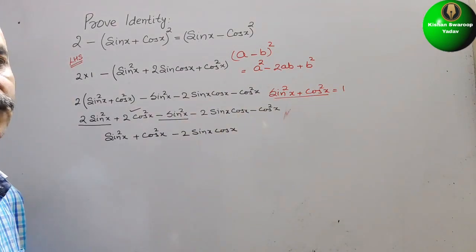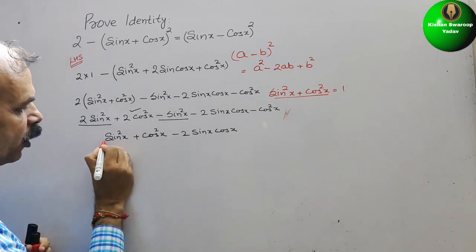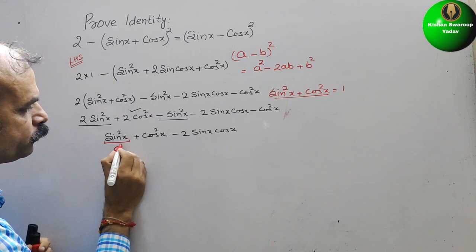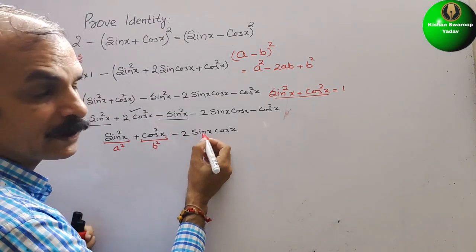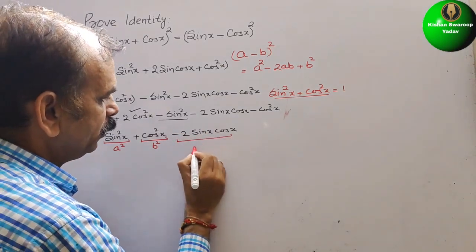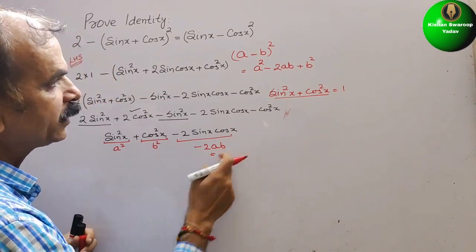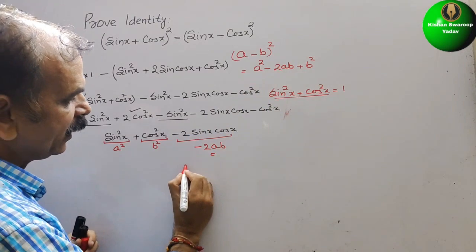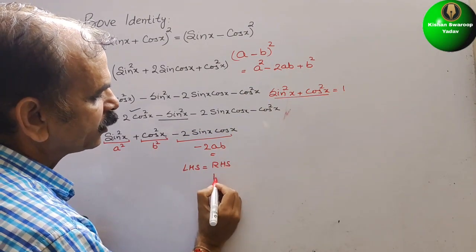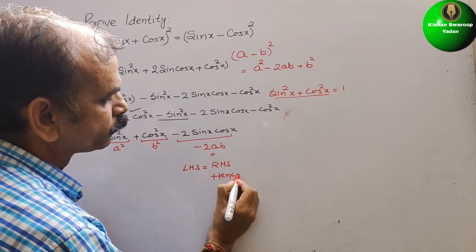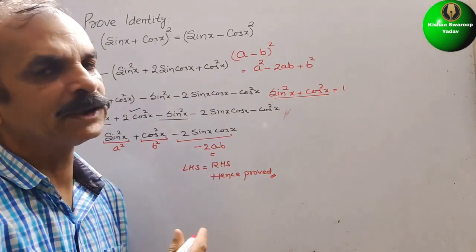Now, see this: a square minus 2ab plus b square. So this becomes sin square x as a square, cos square x as b square, and minus 2 sin x cos x as minus 2ab. You can see this. So now we can say LHS is equal to RHS. Hence, proved. Like this, we have to do this type of question up to LHS is equal to RHS.